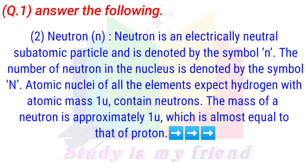Neutron: A neutron is an electrically neutral subatomic particle, denoted by the symbol N. The number of neutrons in the nucleus is also denoted by N. Atomic nuclei of all elements except hydrogen (with atomic mass 1 Dalton) contain neutrons. The mass of a neutron is approximately 1 Dalton, which is almost equal to that of the proton.